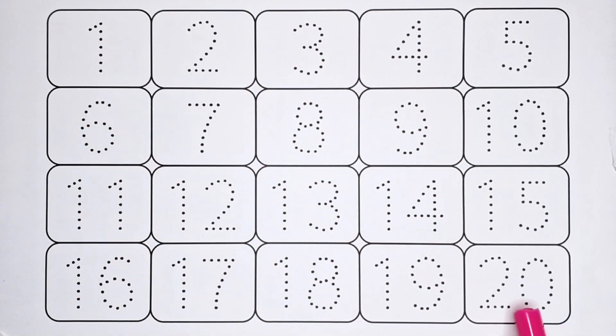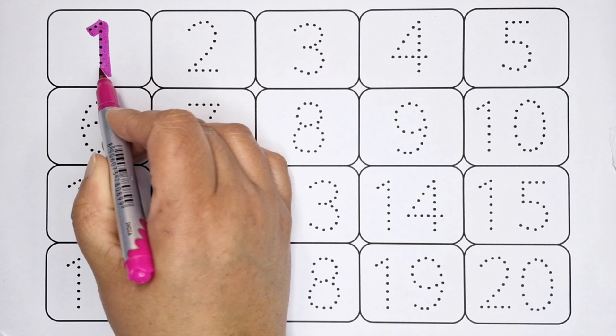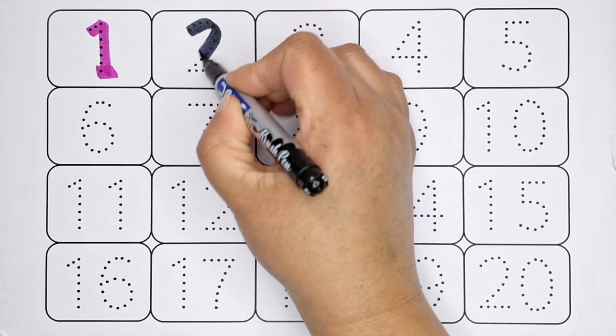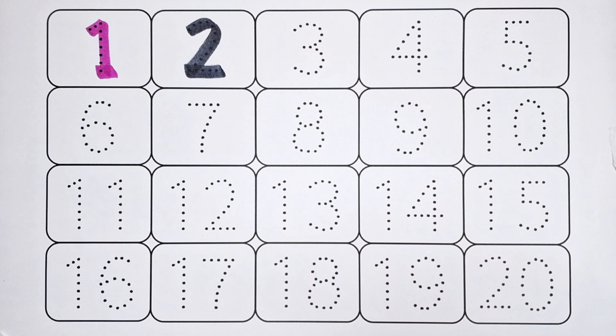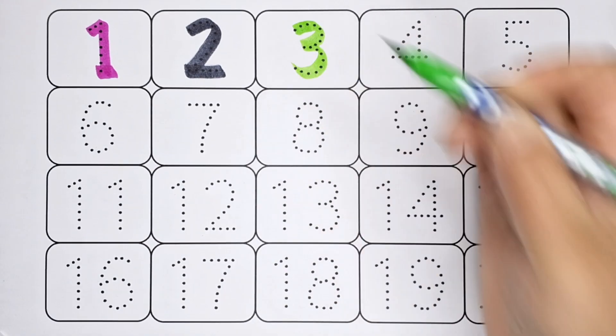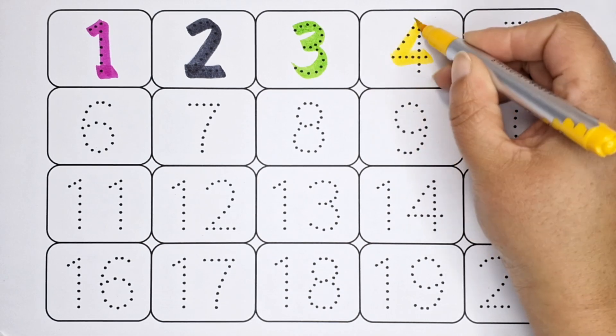1, this is number 1. 2, number 2. This is number 3. 4, this is number 4.